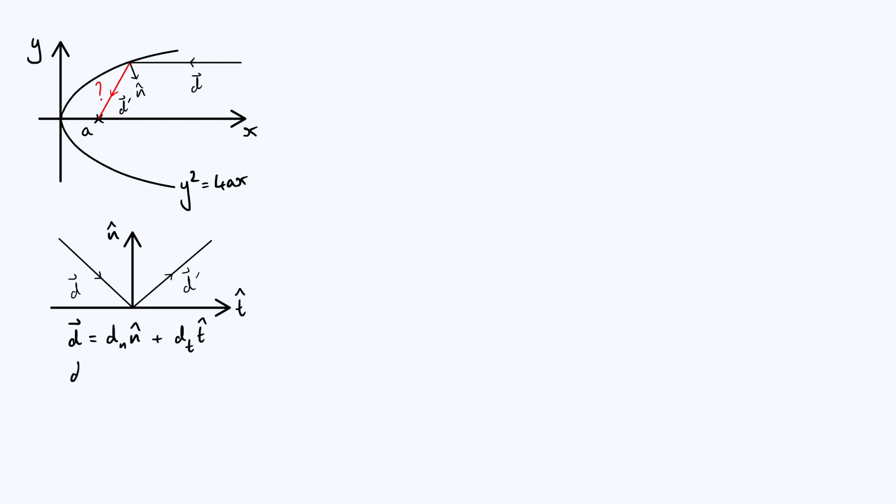So what about d'? Well if you think about it, all that's happened is that the vertical part of d has been flipped because it was coming down, then it's going up, and the tangential component hasn't changed at all by the reflection. So reflection has the effect of flipping the normal component, and so we could write d' as -d_n n̂ + d_t t̂, to show that the normal component has been flipped.